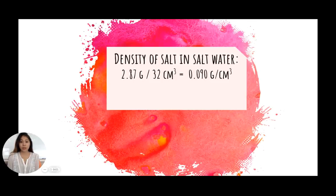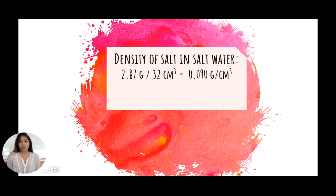We were able to find that the density of salt in salt water was essentially mass over volume. Mass must be in grams and volume in centimeters cubed, so whenever we are given milliliters or liters, we need to make sure we convert that into centimeters cubed. The value of the density became 0.090 grams per centimeters cubed.